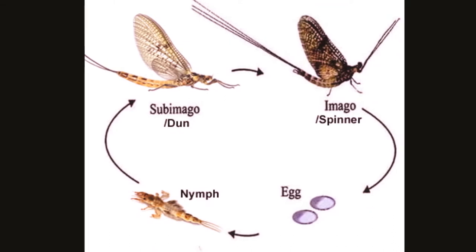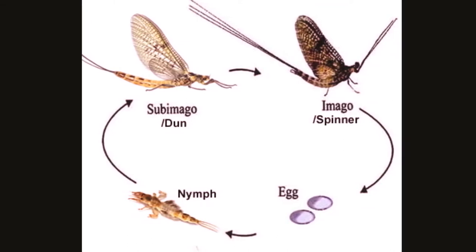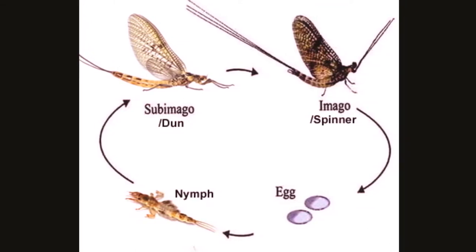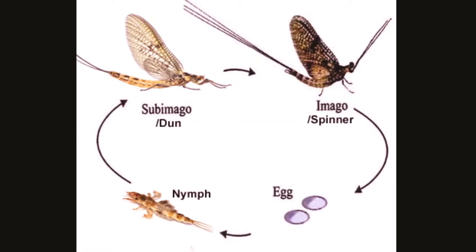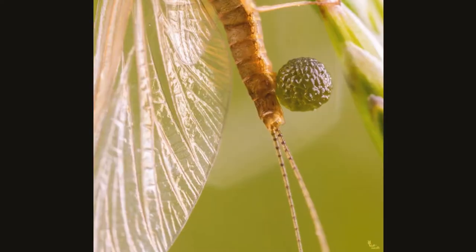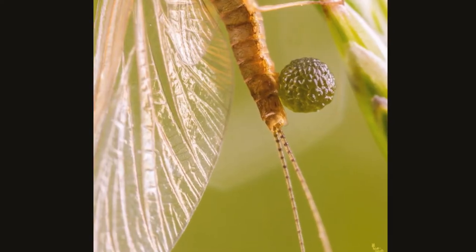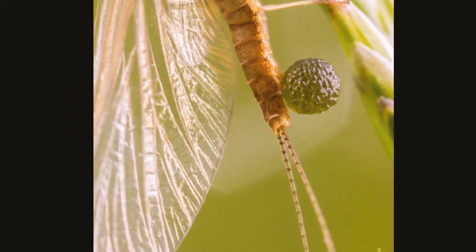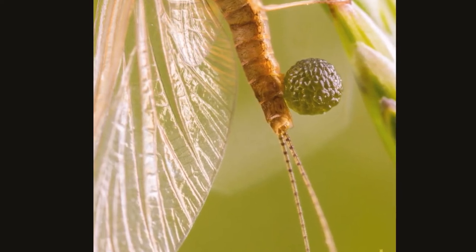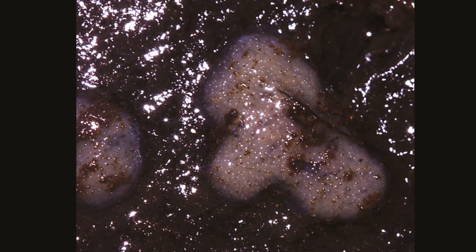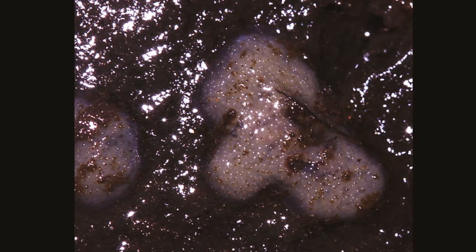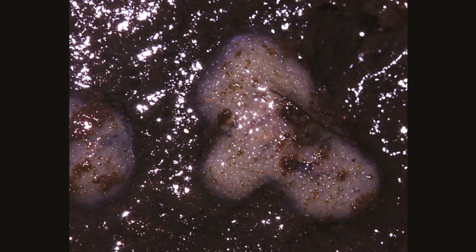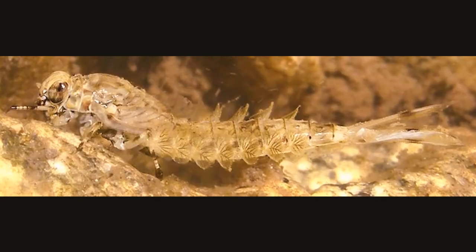The life cycle of Mayflies consists of four stages: egg, nymph, sub-imago and imago. Eggs which vary widely in size and surface detail may be oblong, oval or rounded. Eggs are laid in water and either settle to the bottom or attach to some submerged object. They often hatch in about two weeks to one year.